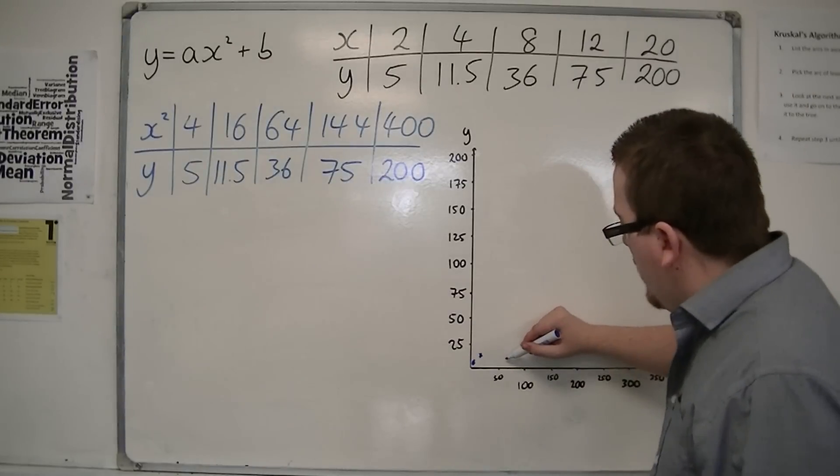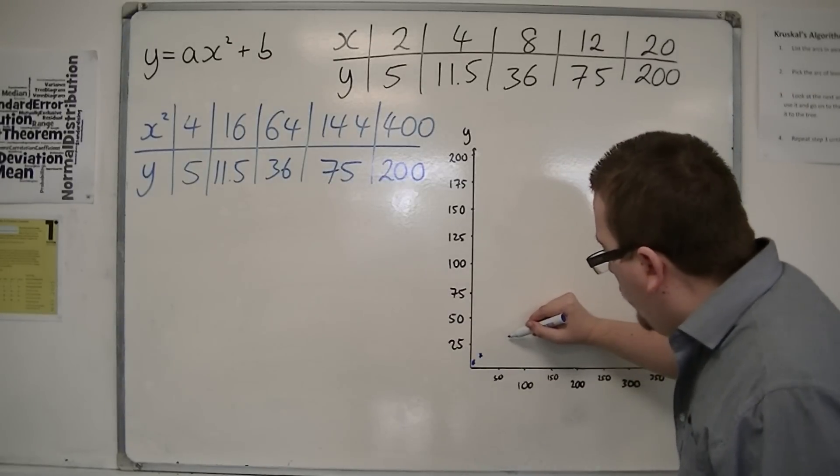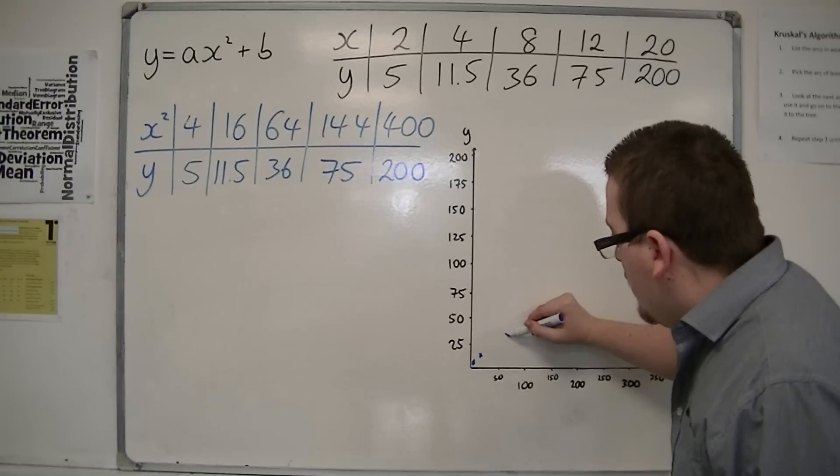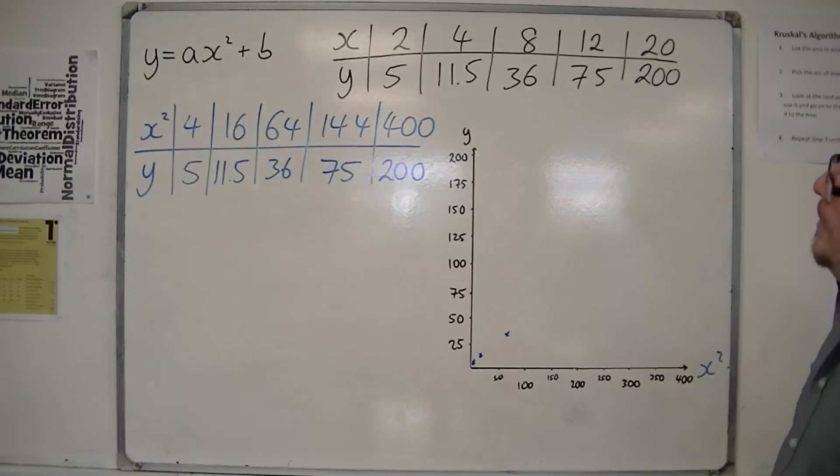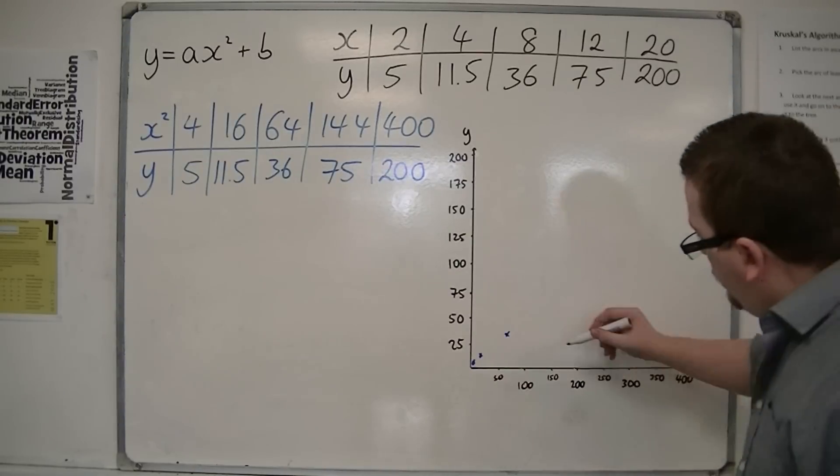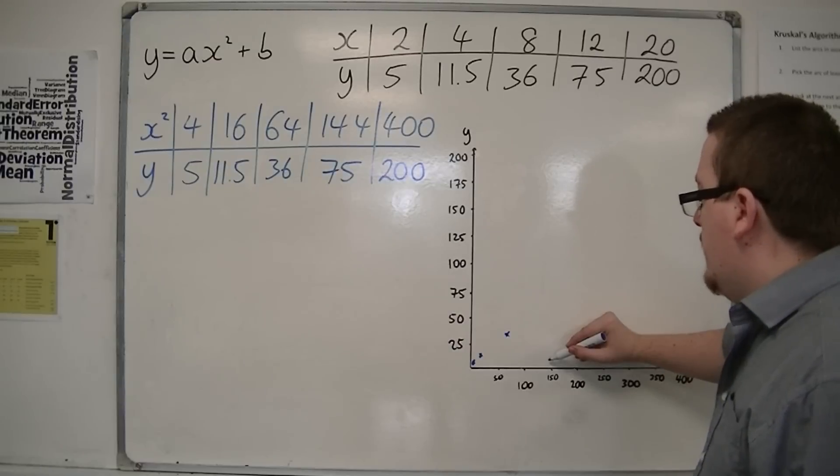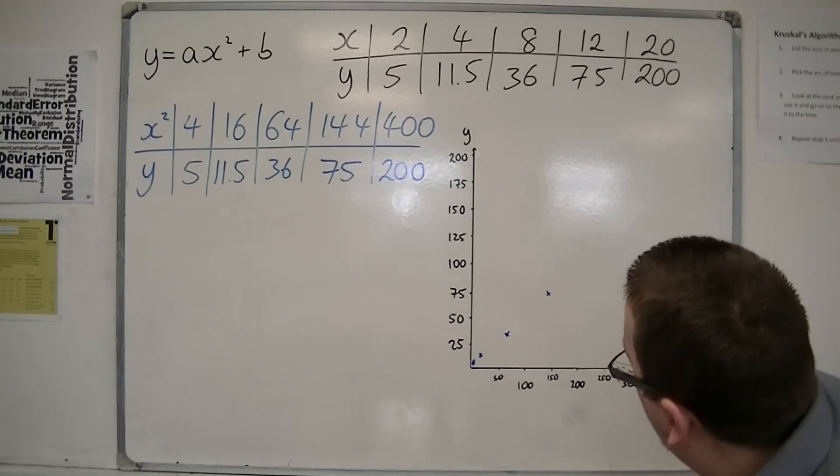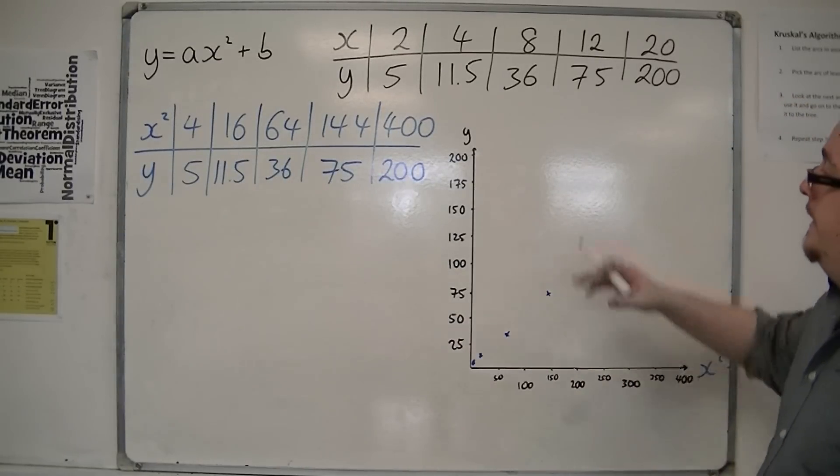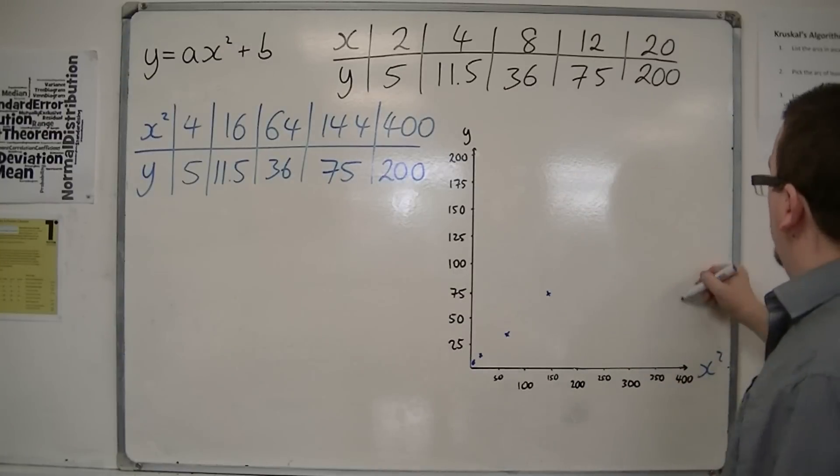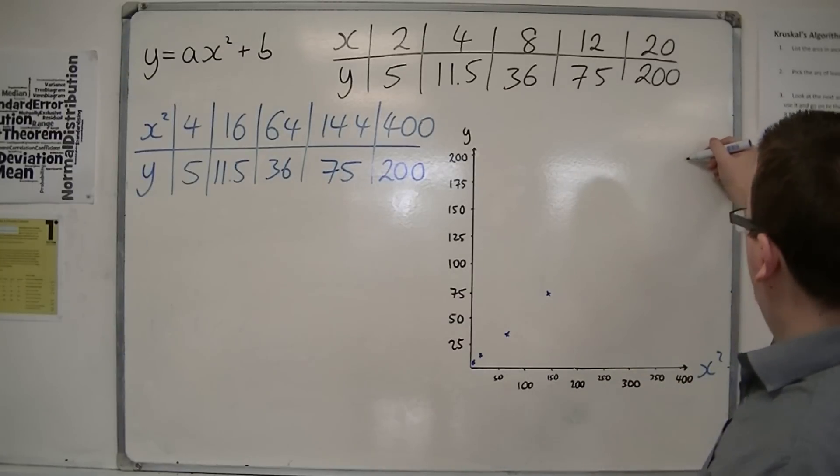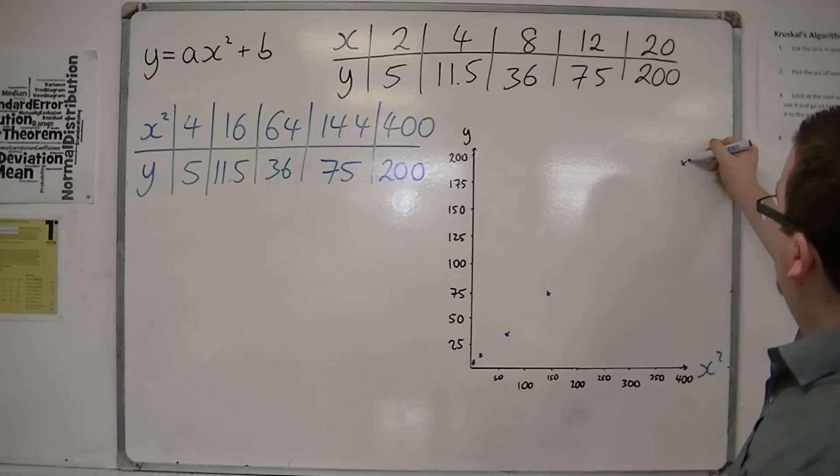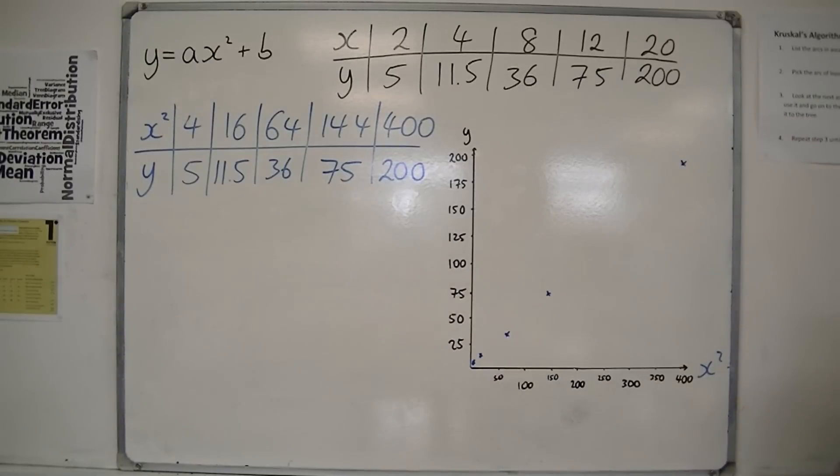Well 64 is going to be up here, and 36 roughly around there. 144, 75, so 144 is going to be around about here, 75 is up here. So 144, 75, roughly there. And then 400, 200. So 400, 200, I think it's roughly about there.